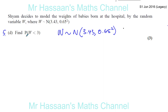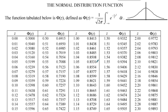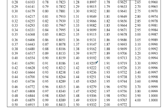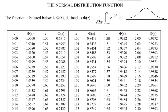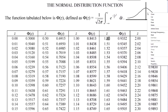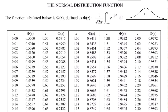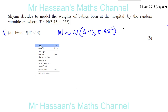We've got to find the probability that the weight W is less than 3, meaning the baby weighs less than 3 kilograms. We're going to use the normal distribution model, which is defined by the table in your formula booklet, and I'll use this normal distribution curve I prepared earlier.